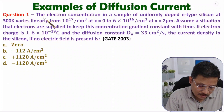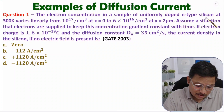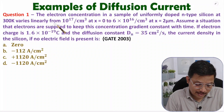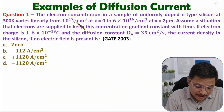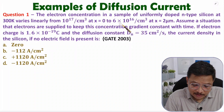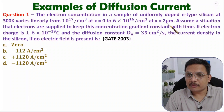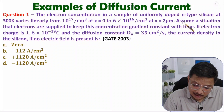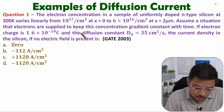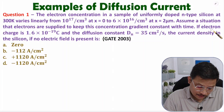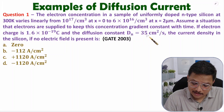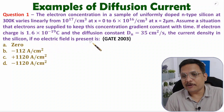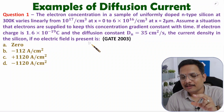In the first question, what is given: the electron concentration in a sample of uniformly doped n-type silicon at 300 Kelvin varies linearly — from 10^17 at x=0 to 6×10^16 at x=2 micrometers. Because concentration is varying, there will be a concentration gradient. Electrons are supplied to keep this gradient constant with time. The electron charge and diffusion constant are given, and no electric field is present.